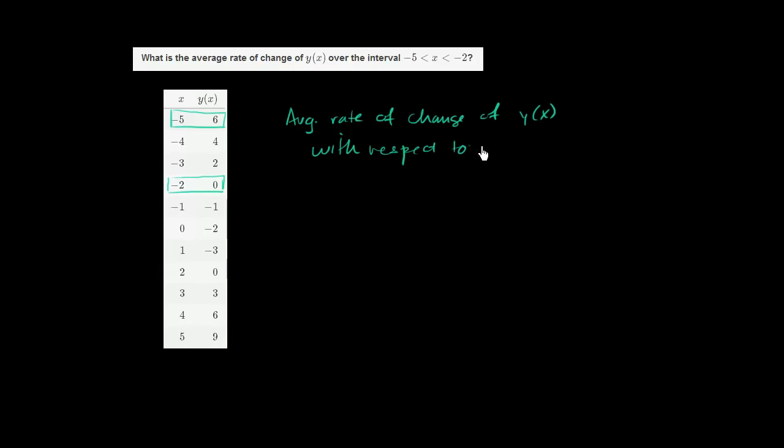Let me make that a little bit neater. With respect to x, this is going to be the change in y of x over that interval over the change of x of that interval. And the shorthand for change is this triangle symbol, delta.